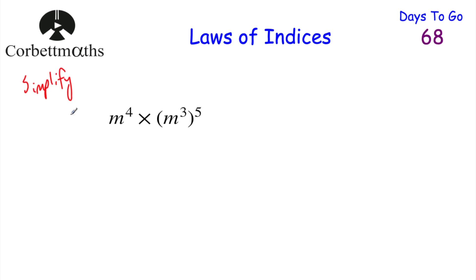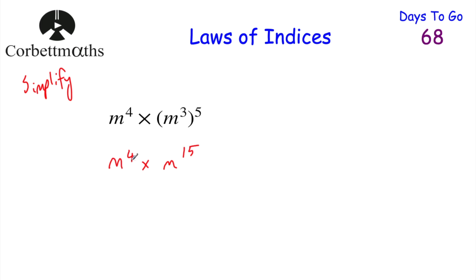Next question: simplify M to the power of 4 multiplied by M cubed to the power of 5. Press pause and try this. First deal with the power of a power: M to the power of 3 to the power of 5 — multiply those powers — 3 times 5 is 15, giving M to the power of 15. Now we have M to the power of 4 multiplied by M to the power of 15. Adding the powers: 4 plus 15 is 19, giving M to the power of 19. If you got that, well done.